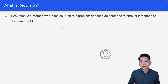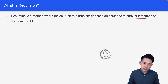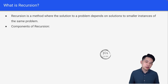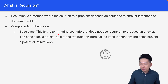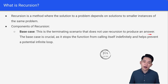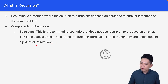First of all, what is recursion? Recursion is a method where the solution to a problem depends on solutions to smaller instances of the same problem. Next, we have components of recursion — basically two main components. The first component would be the base case. This is the terminating scenario that does not use recursion to produce an answer. The base case is crucial as it stops the function from calling itself indefinitely and helps prevent a potential infinite loop.